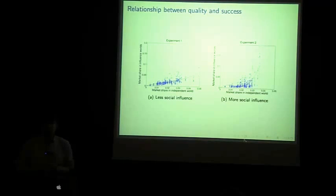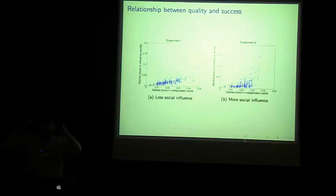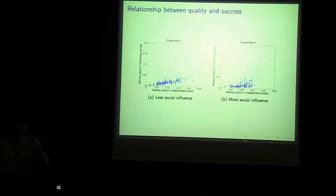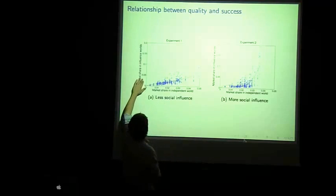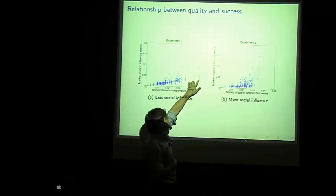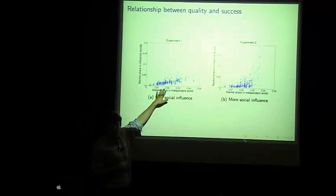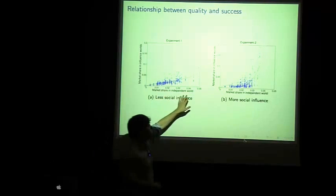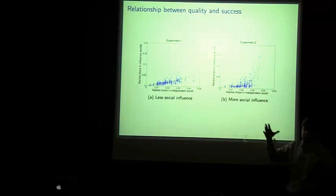We can also use this design to look at the relationship between quality of songs and their subsequent success. By looking at the download behavior of people in the independent condition, we can measure the quality of the songs in the absence of any social pressure on participants. Here in the x-axis, we plot the market share in the independent condition, so this is roughly a measure of quality. And then in the y-axis, we plot the market share in the eight social influence conditions. You can see the range of results here. When I said the results are unpredictable, that does not mean that the results are random. You see here there's a strong relationship between quality and success, but there is some noise. And then as we move from experiment one to experiment two, you see the amount of noise increases dramatically. The range of possible outcomes gets much bigger.